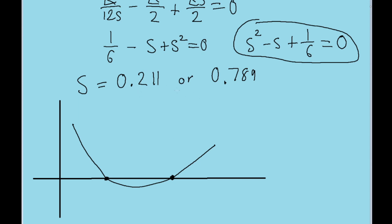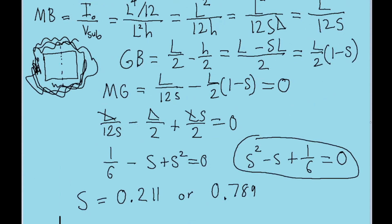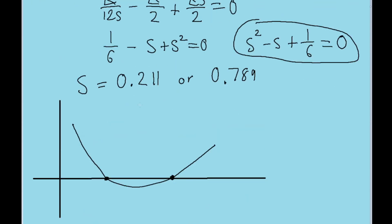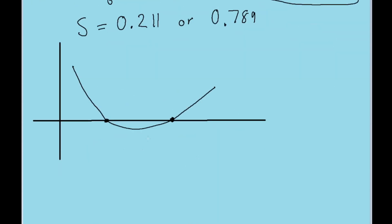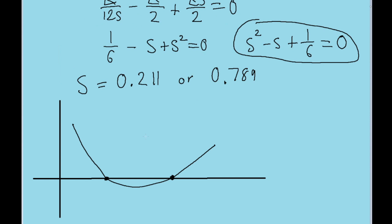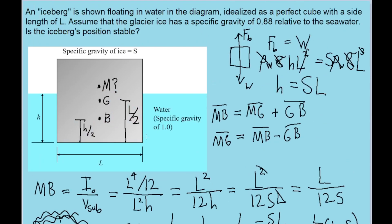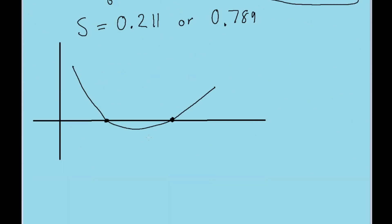What you'll notice is that in between these two values for s that we calculated, the graph is negative. Between those two values, MG is negative, which as we discussed earlier, means that the block, the iceberg, is in a completely unstable position.